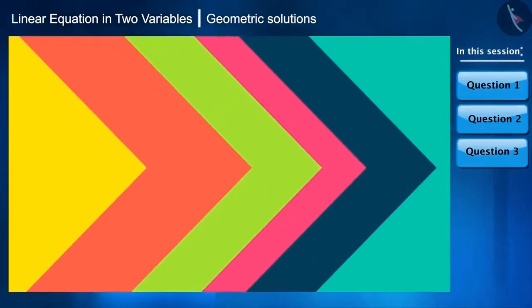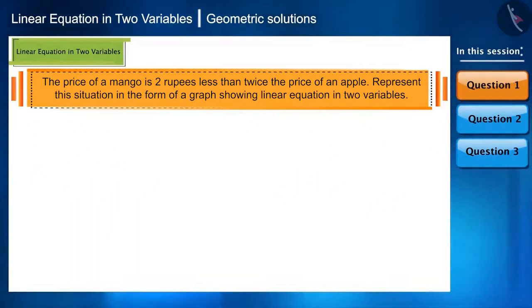Let's start with our first questions without wasting much time. The price of a mango is 2 rupees less than twice the price of an apple. Represent this situation in the form of a graph showing linear equation in two variables. Let's see how to solve such questions.